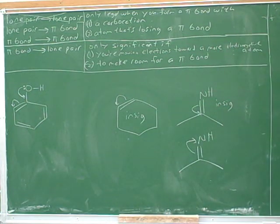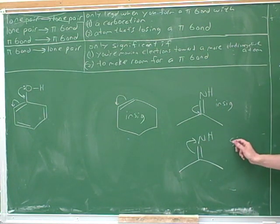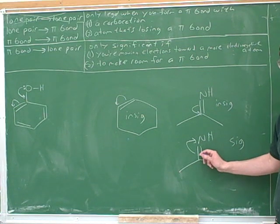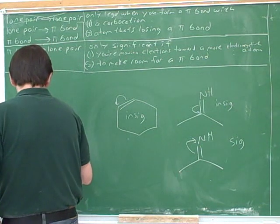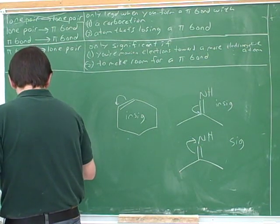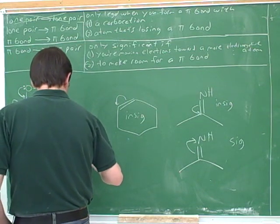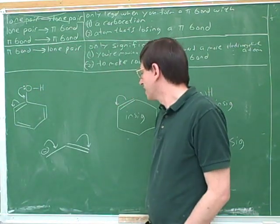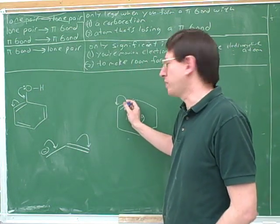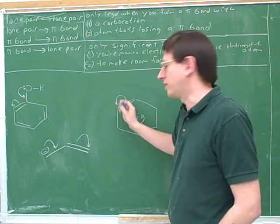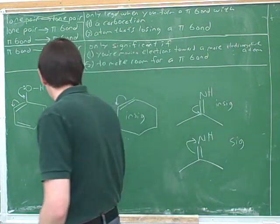Is this significant? Yes — now we're moving the electrons towards the more electronegative element. It's not going to be as significant as where we started because we're forming charges, but it's still significant enough to be worth drawing. Compare this with the previous example: here there was no reason to move the electrons between two carbons, but here there's a good reason — to make room for the pi bond coming in from behind. So this is significant.